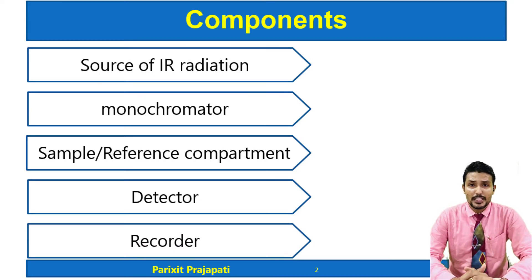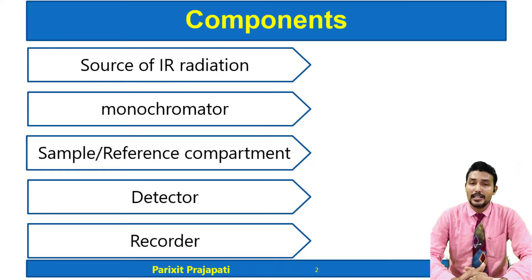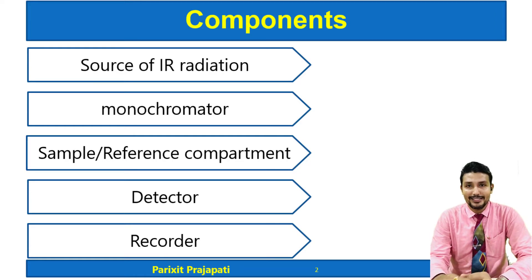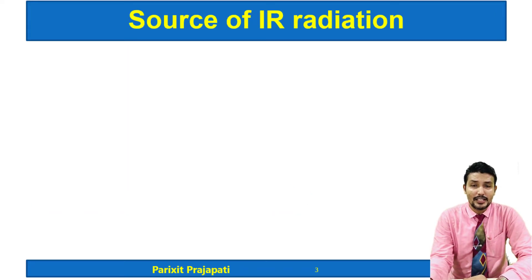In a previous session on the dispersive IR spectrophotometer, we discussed how IR radiation passes through the sample and reference beam, reaches the detector, is amplified, and then the IR spectra is recorded. In this session we will discuss some of these components; other components will be discussed in a separate session. Let us begin with the source of radiation.